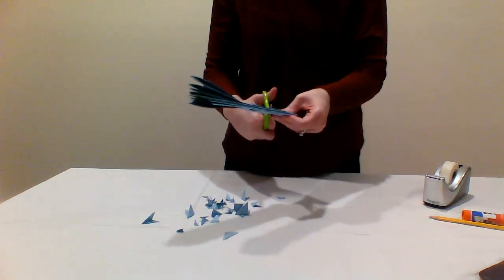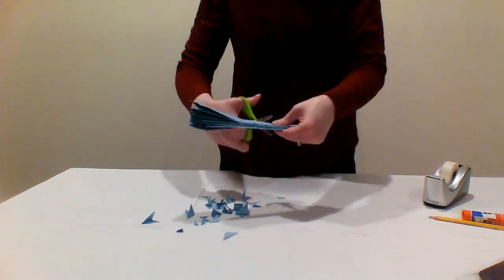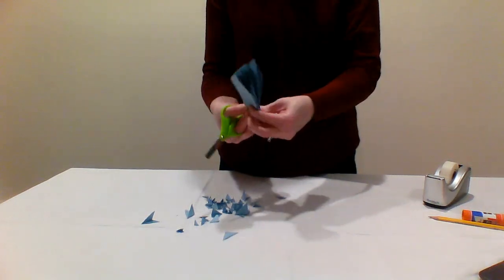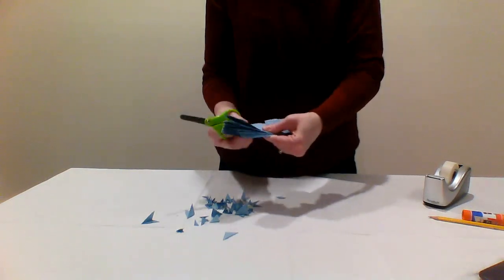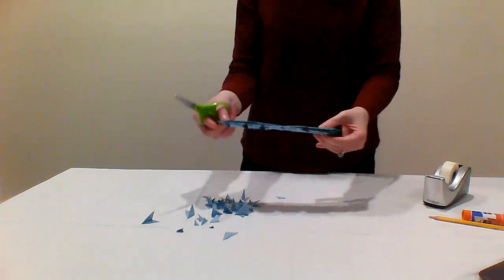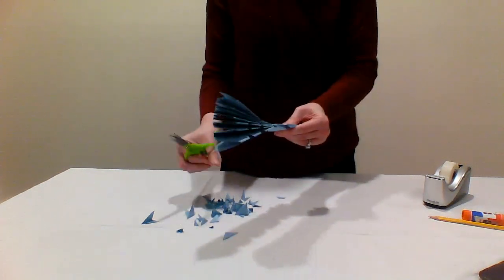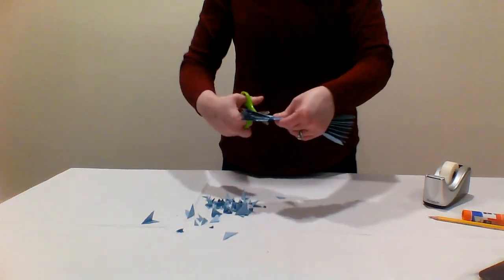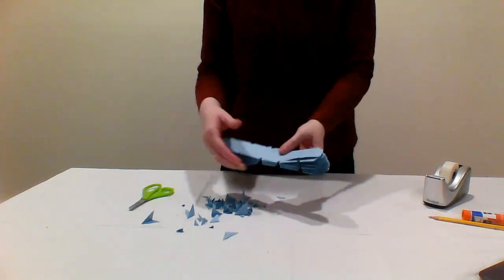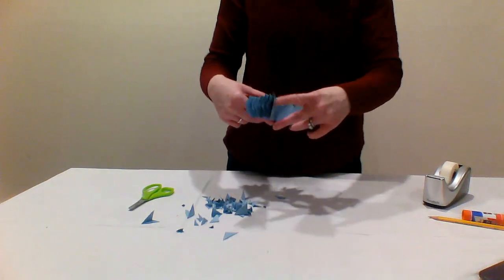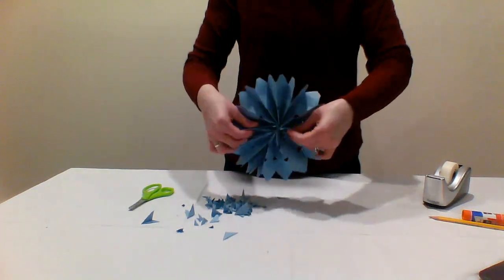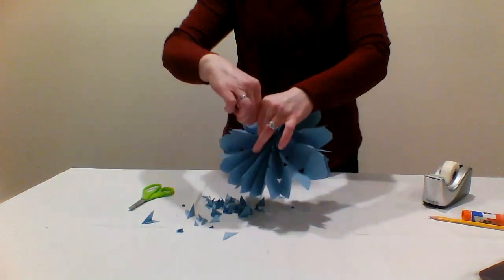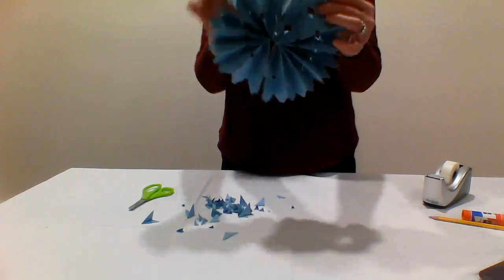Now you can cut small triangles all along the edges of the paper. This will make your snowflake pattern. Now fold the paper and secure the loose ends with a piece of tape. Now you have a large snowflake.